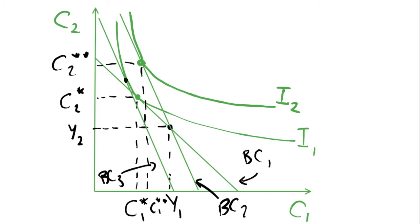BC3 is tangent to indifference curve one at this new point. If I can squeeze that in on this diagram: c2 triple star, c1 triple star. Sorry this diagram is getting very messy — I'll switch to a third color and explain it in words a bit better.